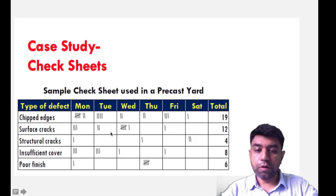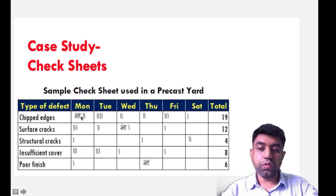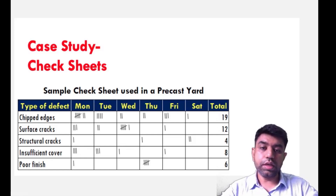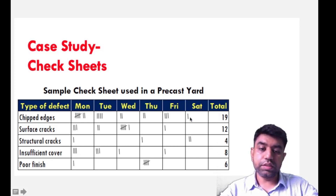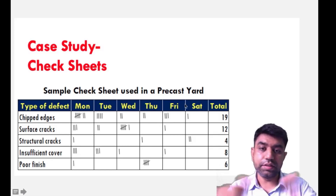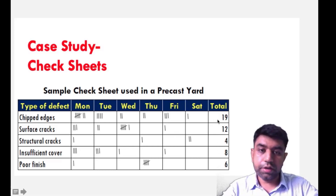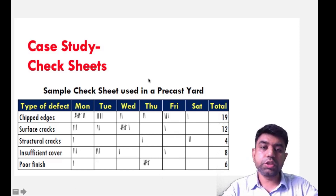Observing carefully, on Monday itself the chipped edges defect was highest. After taking corrective action it was reduced on Tuesday, and then further analysis reduced it from seven down to two defects. By Saturday the chipped edges defect was reduced to one. This way, with a proper tabular representation of data, we can easily take corrective action. Without this representation, defect counts could reach up to 100, making action much harder.